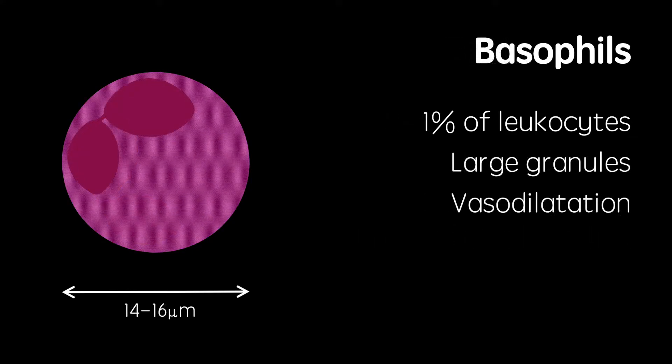The least numerous type of white blood cell are the basophils, making up only 1%. These cells are between 14 and 16 micrometers wide and are the precursor to mast cells.